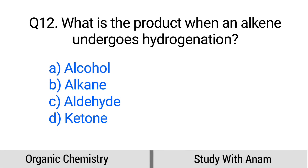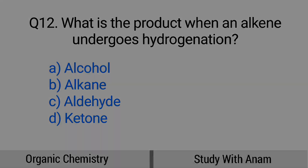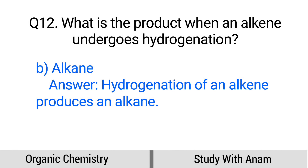Question number 12. What is the product when an alkene undergoes hydrogenation? Option A: Alcohol, B: Alkane, C: Aldehyde, D: Ketone. The correct option is option B, Alkane. Hydrogenation of an alkene produces an alkane.